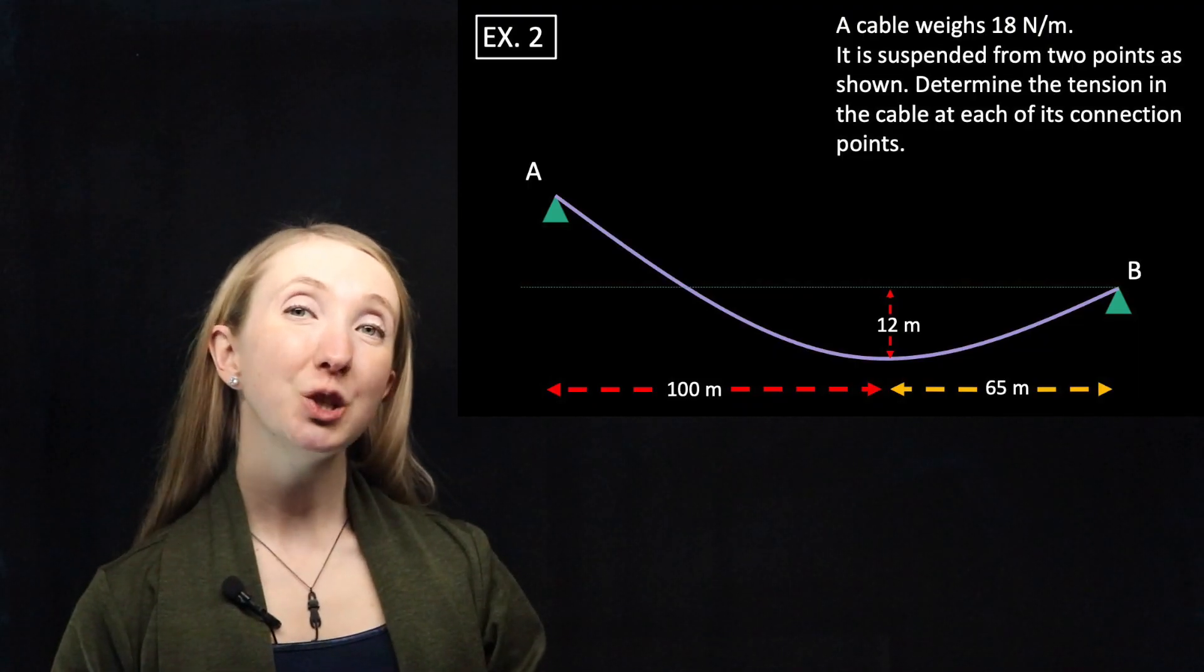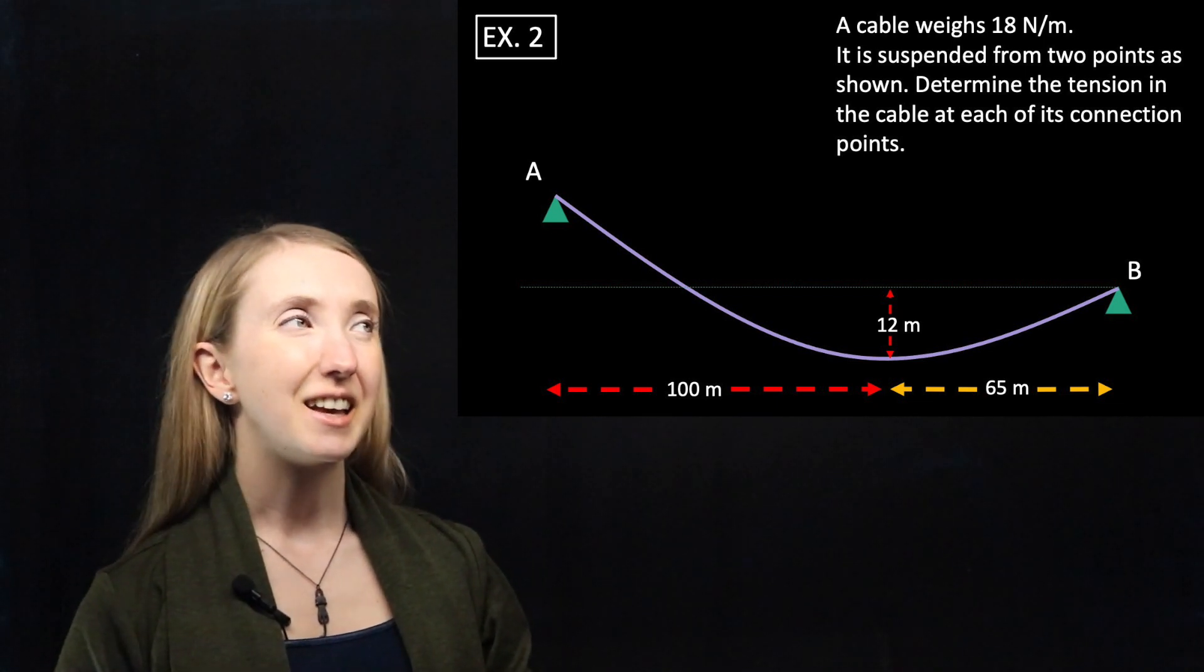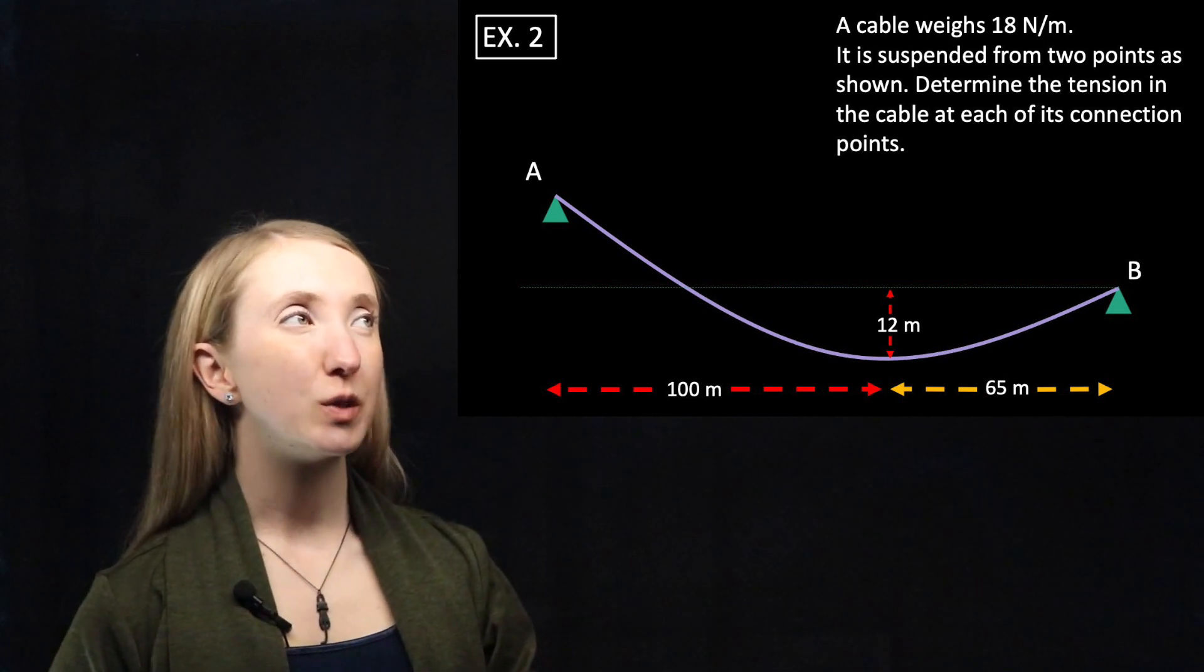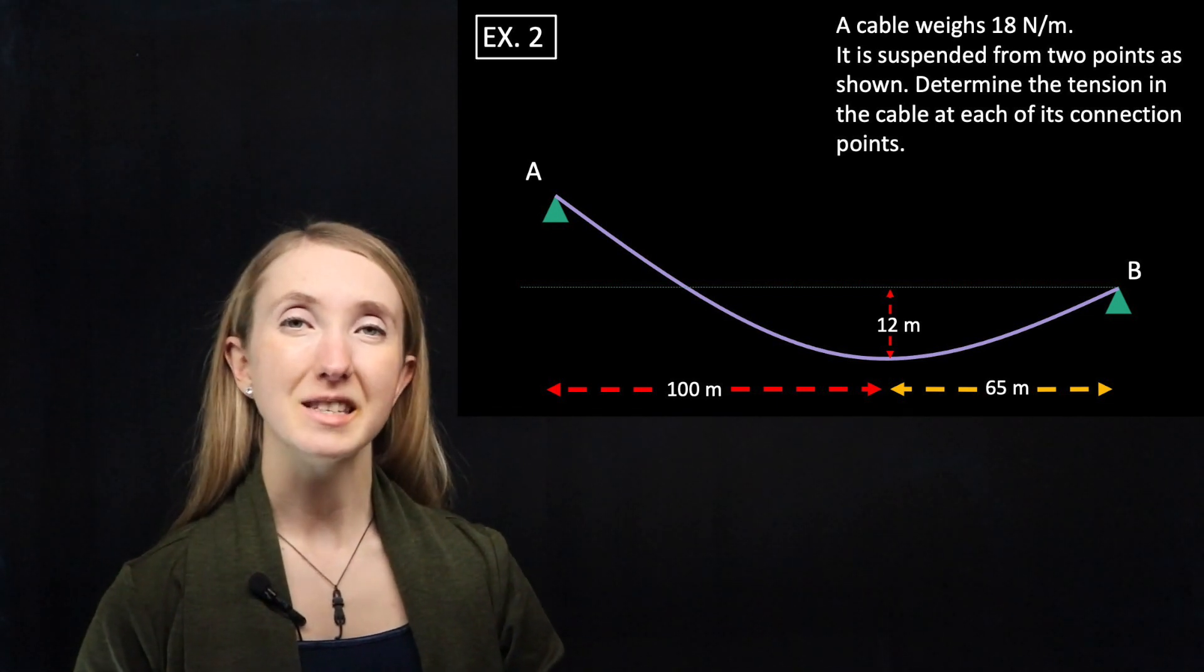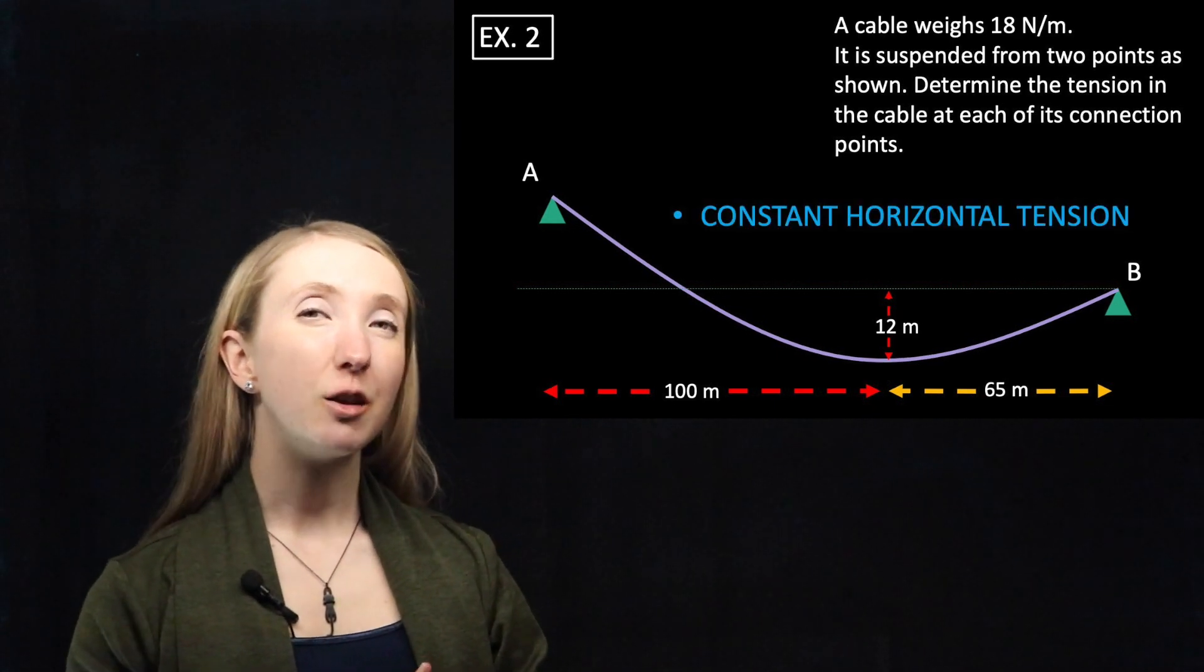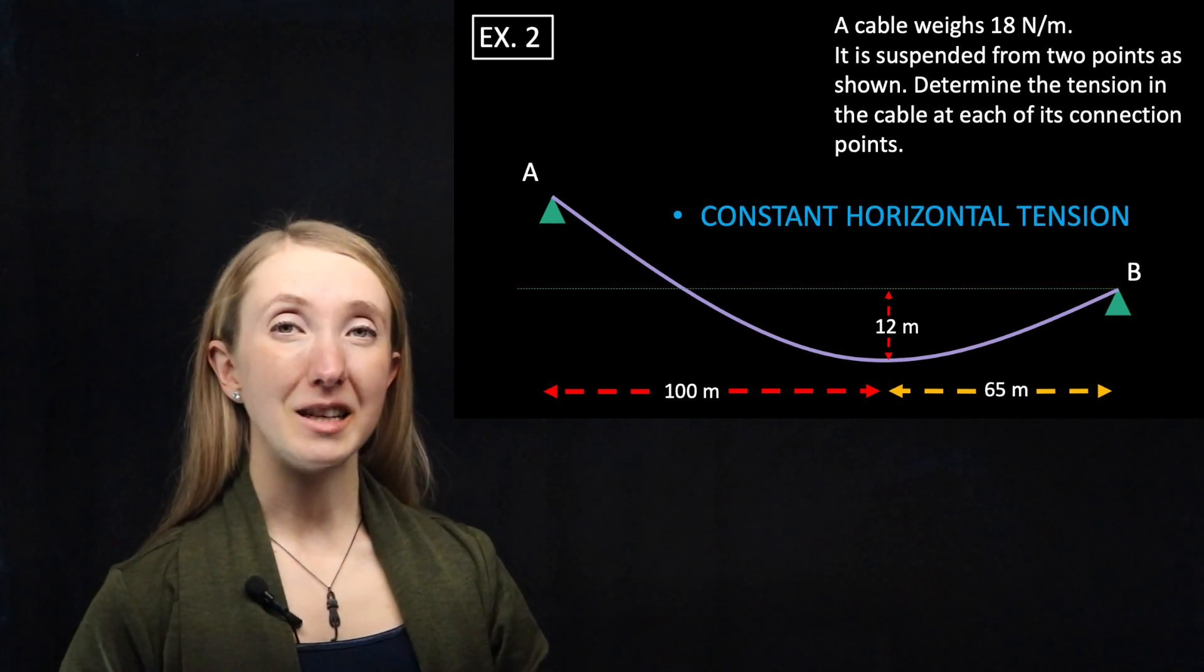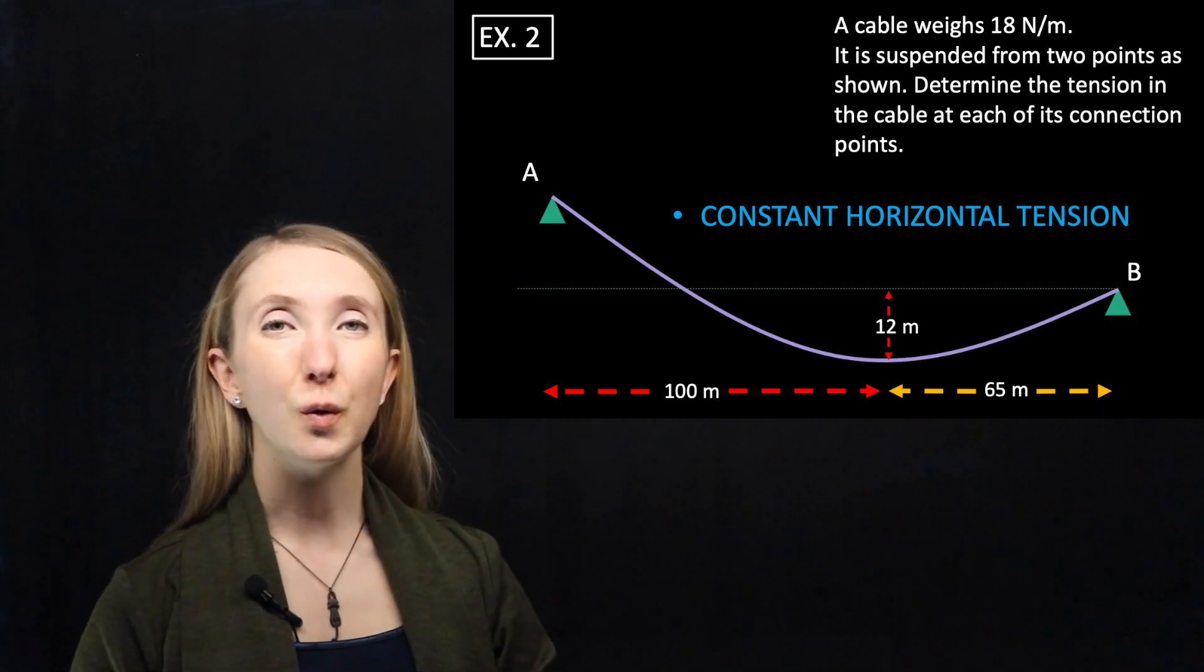For example 2, we have a cable suspended from points A and B. It has a self weight of 18 newtons per meter, and we're asked to find the tension forces that happen at each of the supports. Because self weight is the only load acting on our system, we know that the cable will have a constant horizontal tension.